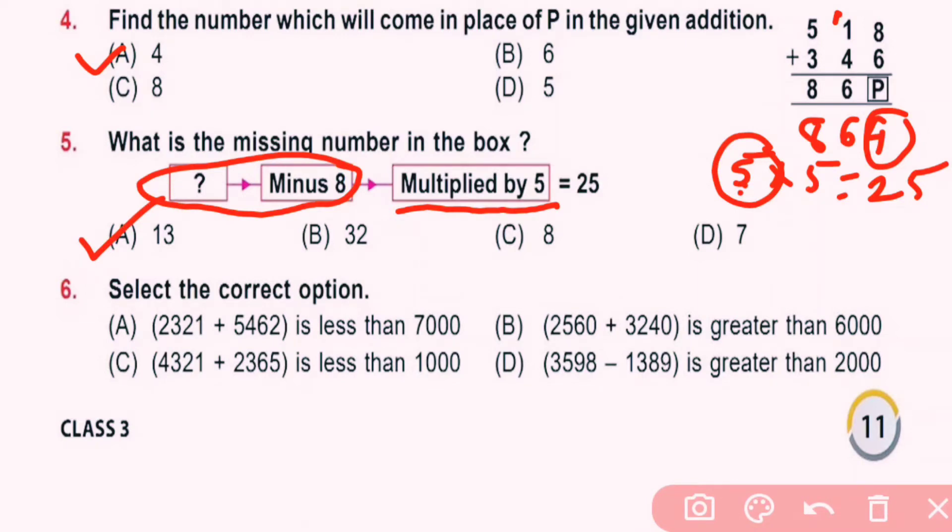Question number 6: Select the correct option. Here 2321 plus 5462 is less than 7000. So we first add this. 1 plus 2 is 3, then 2 plus 6 is 8, then here 3 plus 4 is 7, and 2 plus 5 is 7. So 7783 is greater than 7000. So option A is incorrect. Now option B: here 0 plus 0 is 0, 6 plus 4 is 10 and 1 carry over. 5 plus 1 is 6, 6 plus 2 is 8, and 2 plus 3 is 5. So 5800 is smaller than 6000.